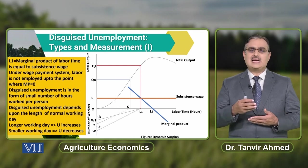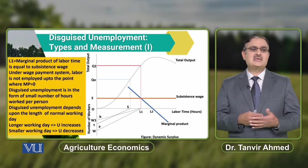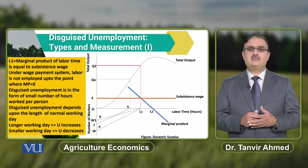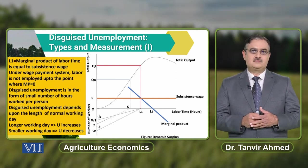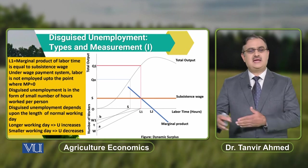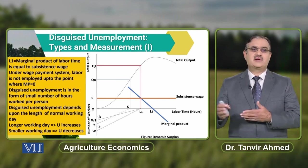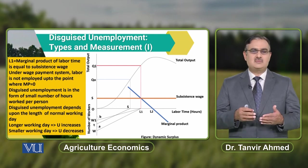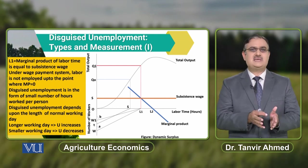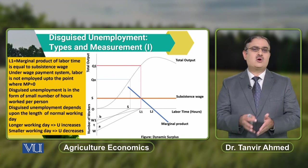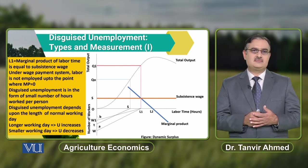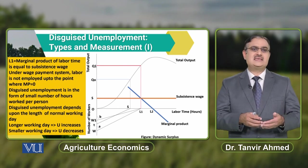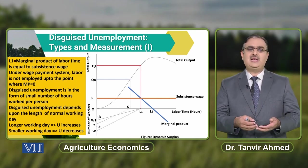This is called dynamic surplus, or dynamic surplus determination. The major factor is the labour working day. If there is an increase in the length of the working day, then disguised unemployment will increase. And if there is a smaller working day, then disguised unemployment will decrease.